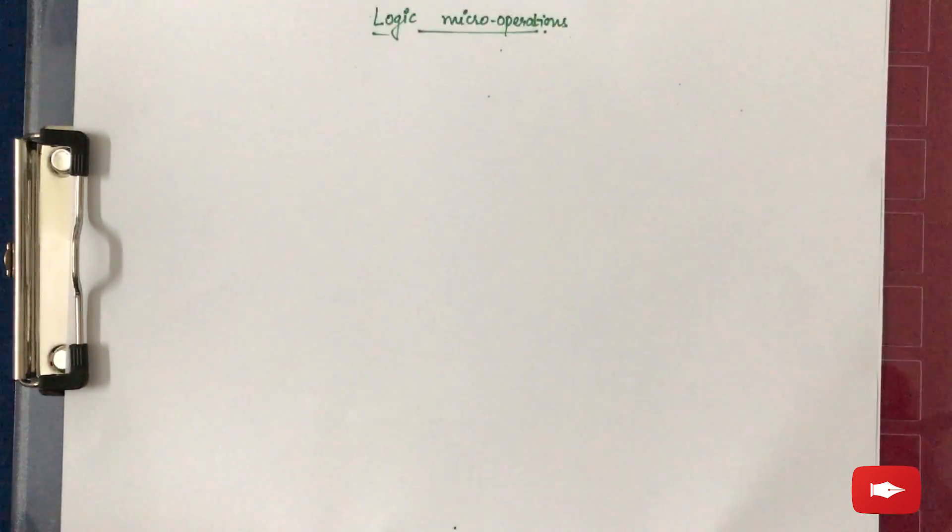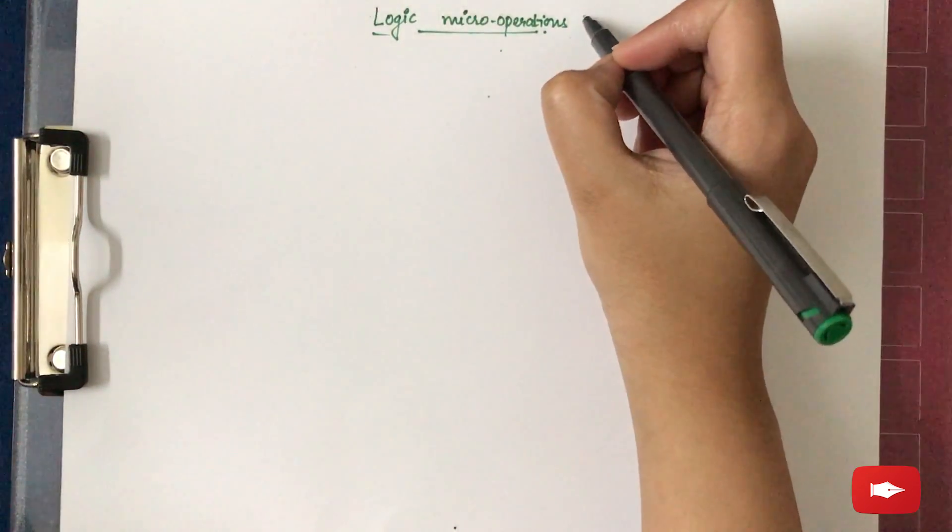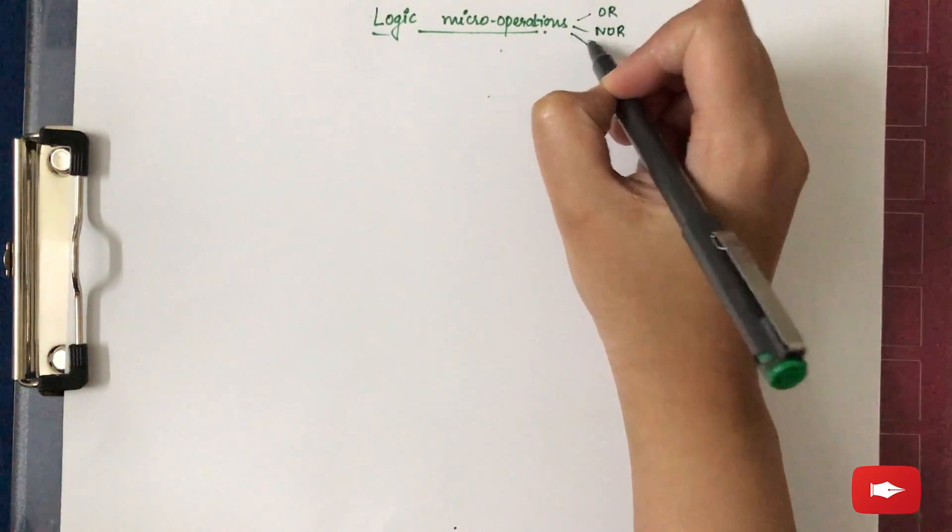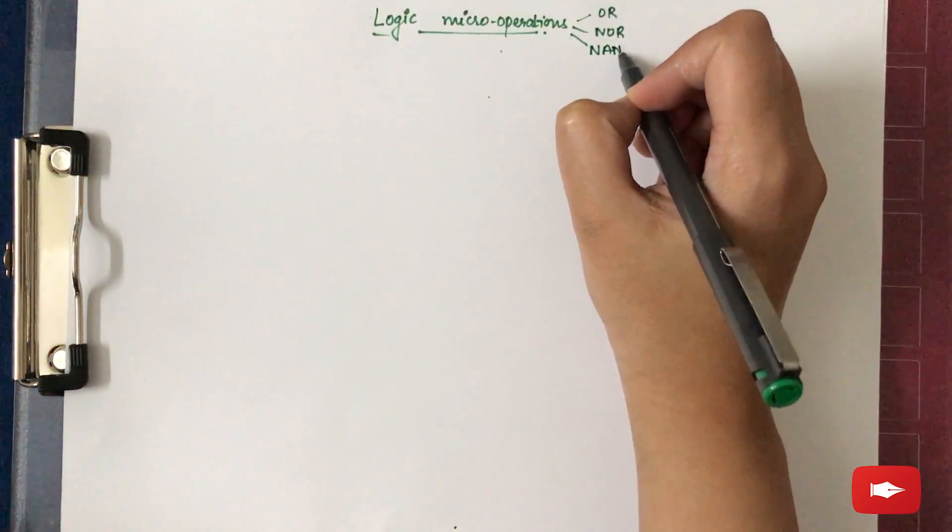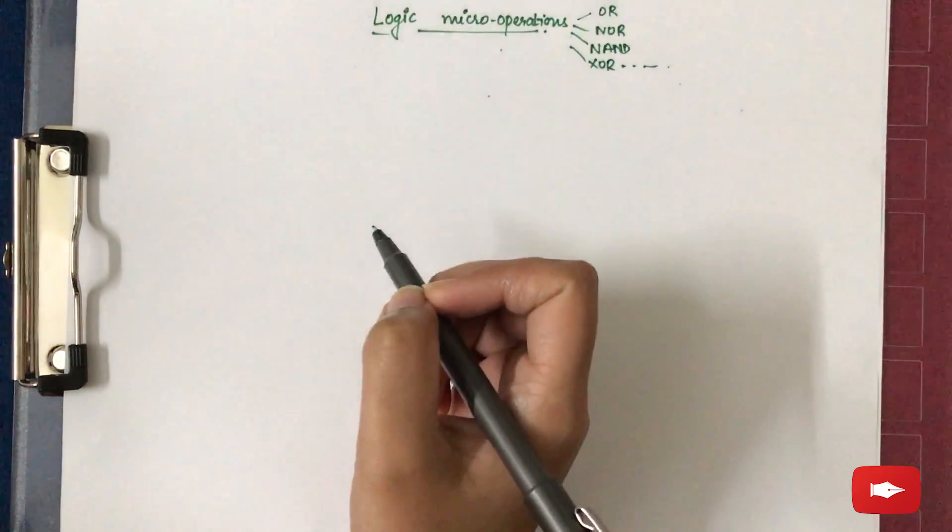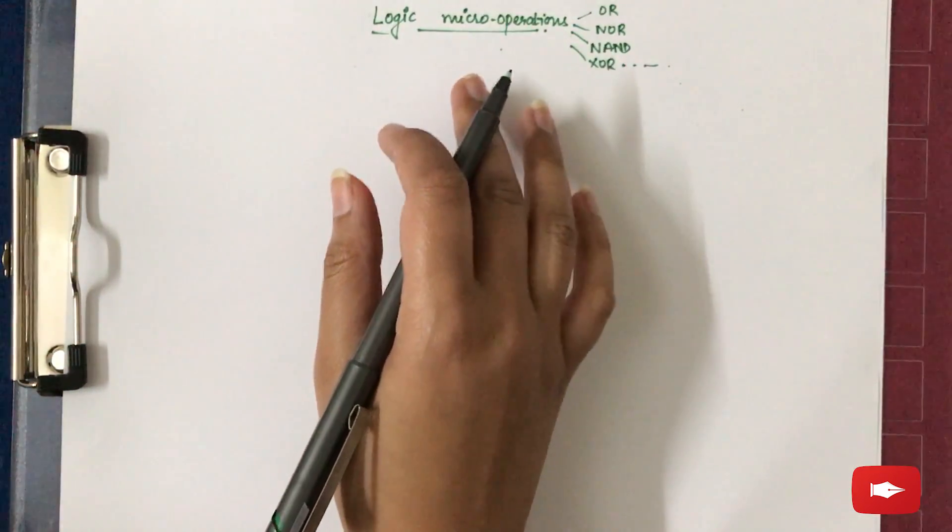The topic for today's video is logic micro operations. Firstly, let us see what all operations are included in the logic micro operations. There are operations such as OR, NOR, NAND, EXOR, and many more in these logic micro operations.